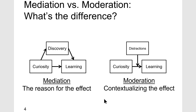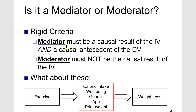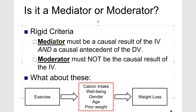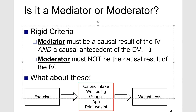Now how do I know if it's a mediator or a moderator? There is some rigid criteria, so you will always know if you've got it right. A mediator must be the causal result of the IV and must be the causal antecedent of the DV — meaning the IV must cause the mediator and the mediator must cause the DV. Using causal deterministic language loosely here, but in essence one must cause the other must cause the other.